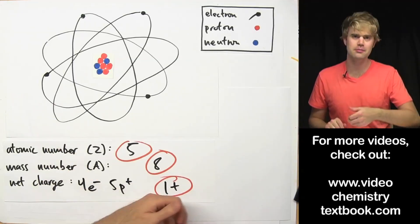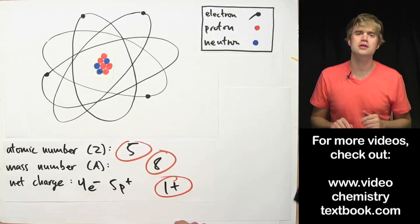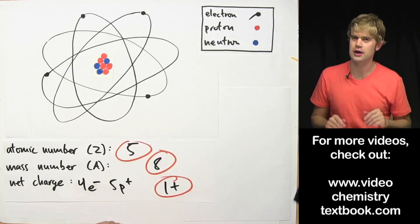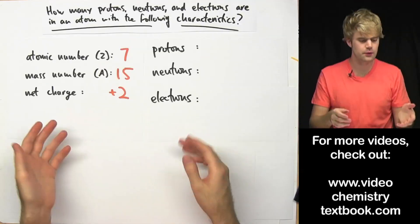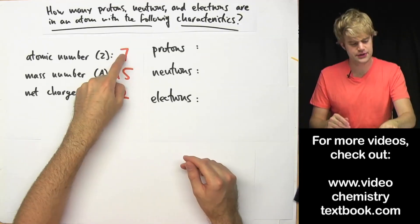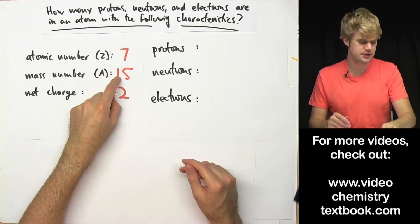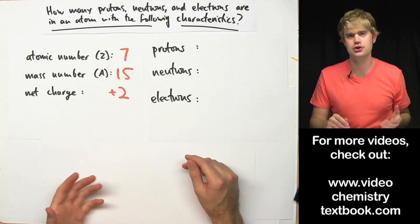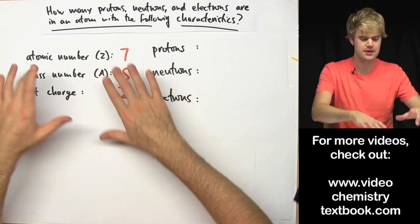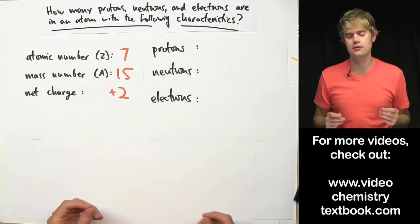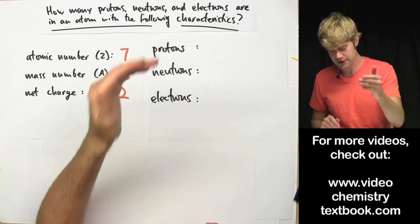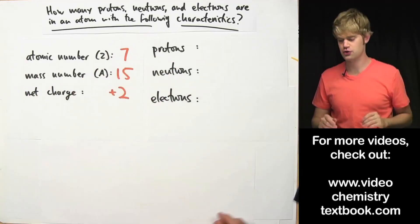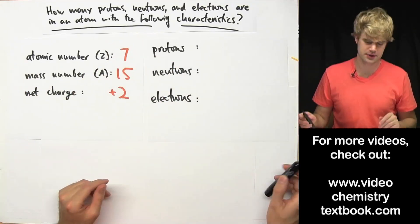This is kind of a basic problem. Now we'll move on to stuff that's a little trickier. So here we've got an atom with this atomic number, this mass number, and net charge. From this information we need to figure out the protons, neutrons, and electrons that are in this atom.